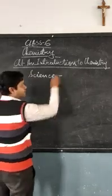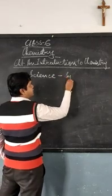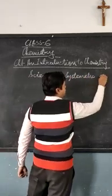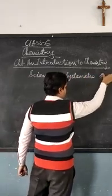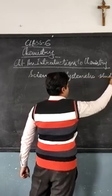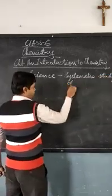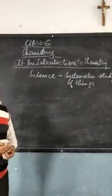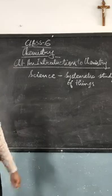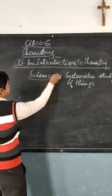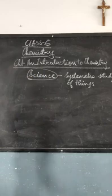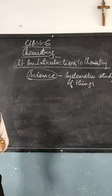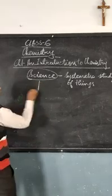What was science? Science is the systematic study of things which is proved through experiments and observations. This you have already studied up till class 5th. But now in this class, we are going to study the branches of science separately.